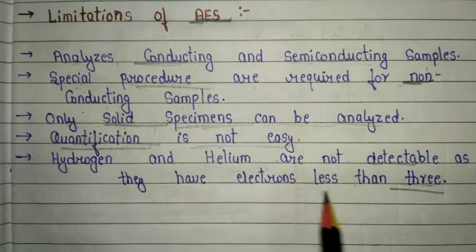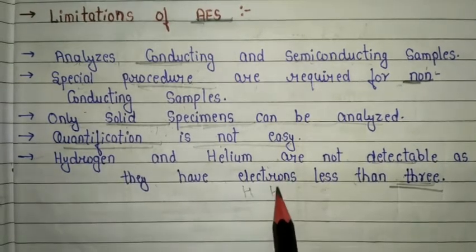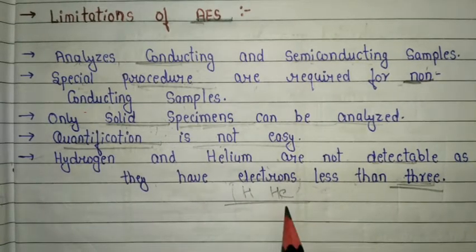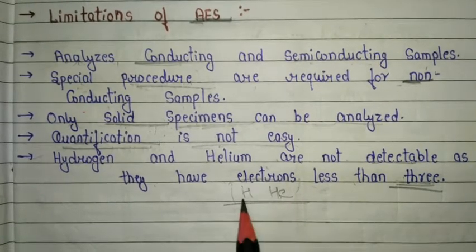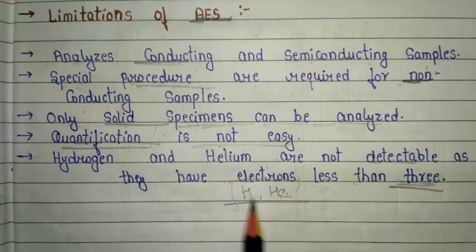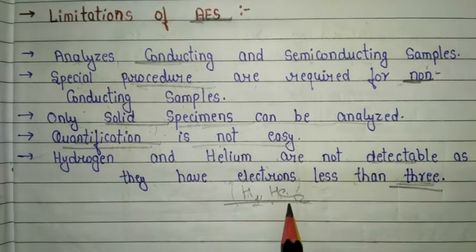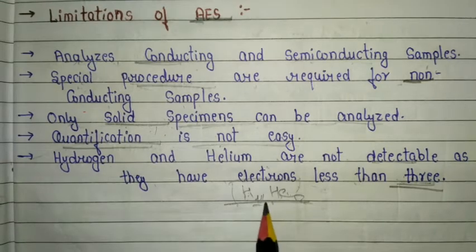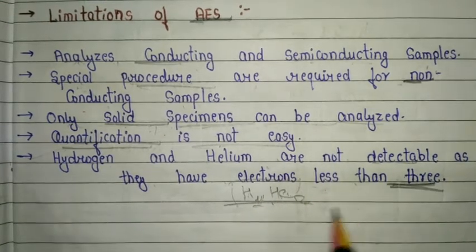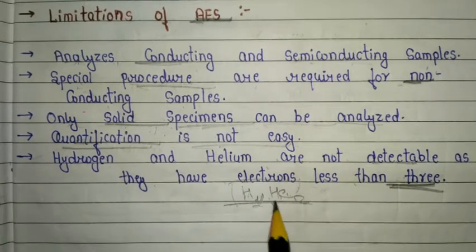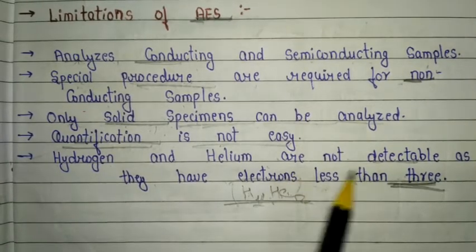Hydrogen and helium are not detectable as they have fewer than three electrons — hydrogen has one electron and helium has two. All elements above helium can be used in this process. These are the basic limitations of Auger electron spectroscopy.